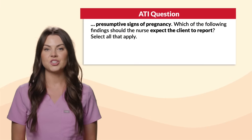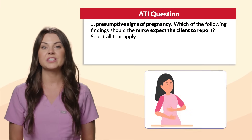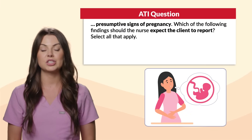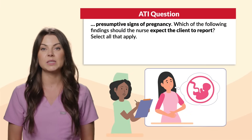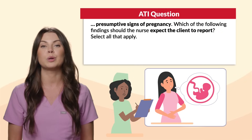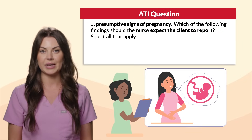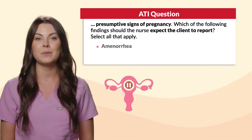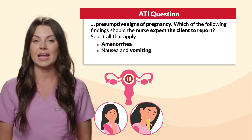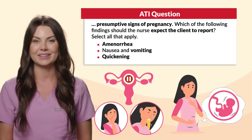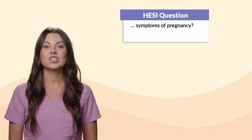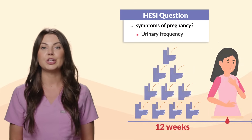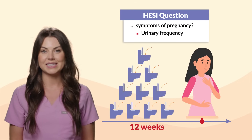ATI mentions presumptive signs of pregnancy. Which of the following findings should the nurse expect the client to report? Select all that apply. The three answers here would be amenorrhea, nausea and vomiting, and quickening. Hesse mentioned symptoms of pregnancy — and that would include urinary frequency.